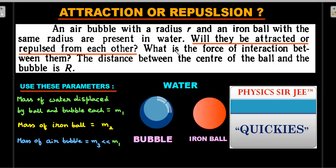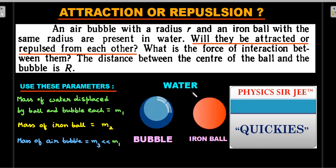Since no other parameters are given, I'll use these: mass of water displaced by either the ball or the bubble is m1 — meaning the volume occupied by the bubble would have contained a mass m1 of water. Mass of the iron ball is m2, and mass of the air bubble, m3, is very very small compared to m1 and m2. There is no Earth, no g in the downward direction — water is an infinitely large volume.